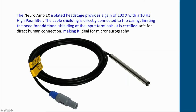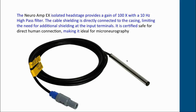If you use intraneural stimulation through the microelectrode, you can attach a small mini-alligator clip directly to the terminal of the active electrode and deliver currents up to 1 mA without fear of damaging the circuitry. The NeuroAmpX is safe for direct human connection, making it ideal for microneurography. Its shape also allows it to be used for animal research — it can fit into a Narishige micromanipulator — making it ideal for extracellular recordings from individual neurons in the brain or from peripheral nerves in anaesthetised animals.